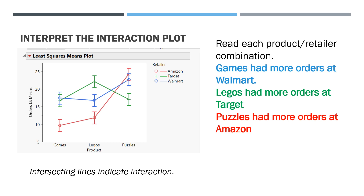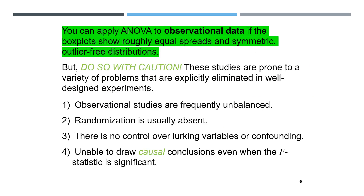That's all we're going to do with factorial designs. You can apply analysis of variance to observational data if the box plots show roughly equal spreads and symmetric, outlier-free distributions — in other words, normally distributed. We want to do so with caution. A lot of business studies are observational, but they're prone to problems. They're often unbalanced with unequal sample sizes, randomization is usually absent, there's no control over lurking variables or confounding, and we're unable to draw causal conclusions even when the F statistic is significant.